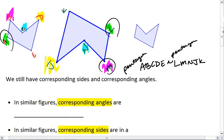And as I mentioned, what we see is we still have corresponding sides and corresponding angles. Angle A corresponds to angle L. Angle B corresponds to angle M. Meaning that side AB corresponds to side LM. It's crucial that you understand that we still have these corresponding parts.